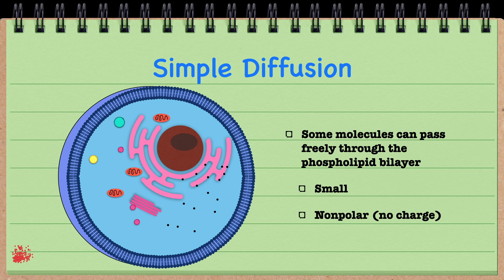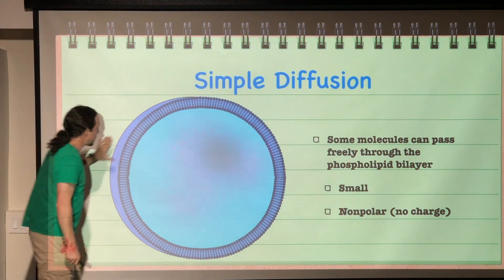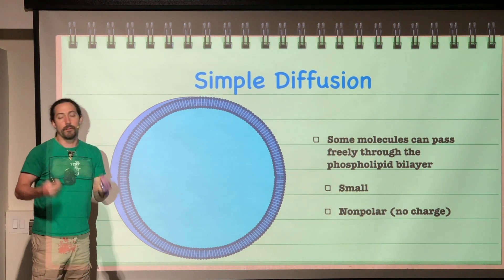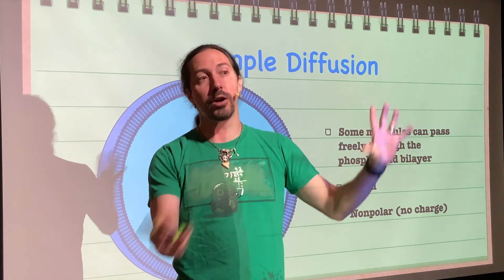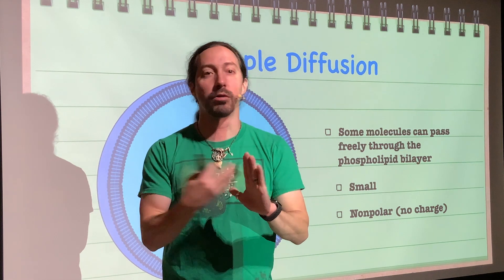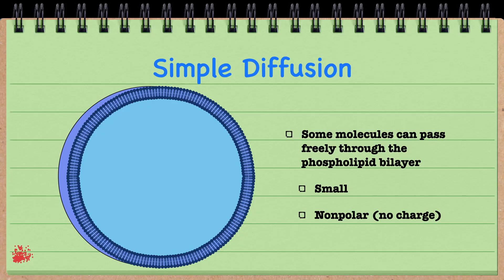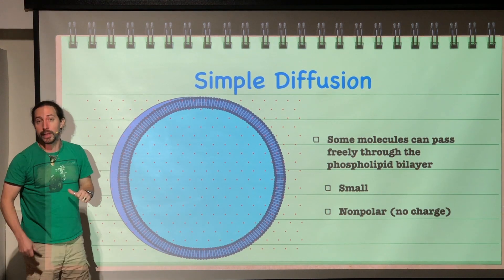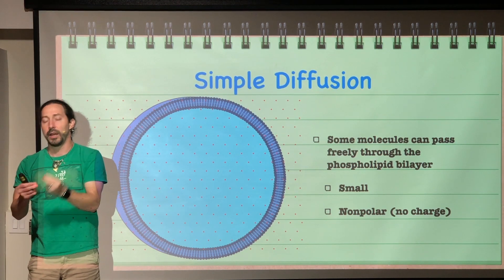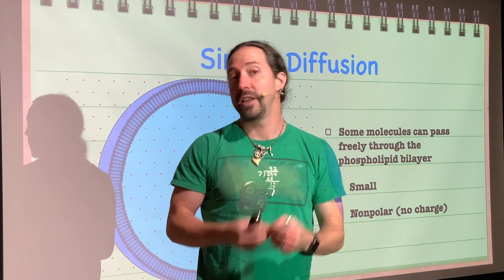When we add a membrane into this mix, we call this simple diffusion. I'm removing the organelles so we can focus on the membrane itself. Small, non-polar molecules can simply diffuse right across the membrane — it's like wind going through a screen. The gaps in the phospholipid bilayer are large enough for small, non-polar molecules to pass through. However, if molecules have a charge, they can't pass through the bilayer, and if they are large, they also cannot pass through.